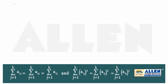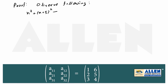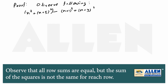Proof. Observe the following identity: n² + (n+5)² − (n+1)² − (n+4)² = 8.